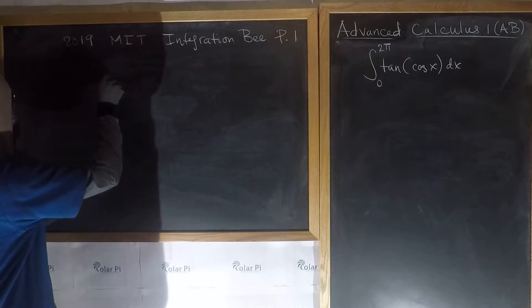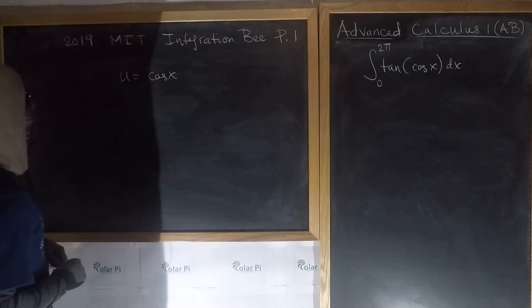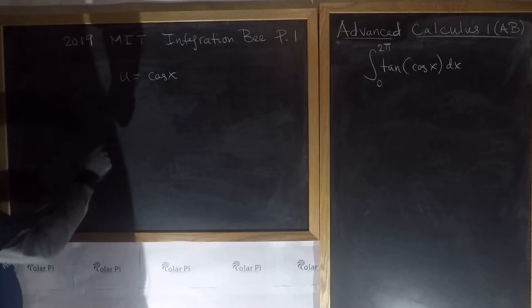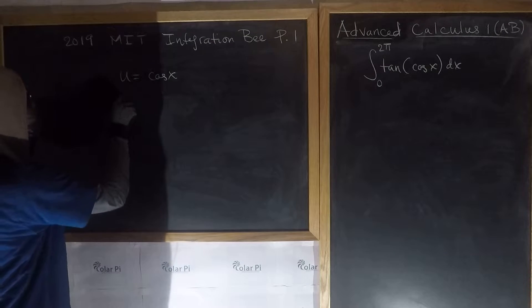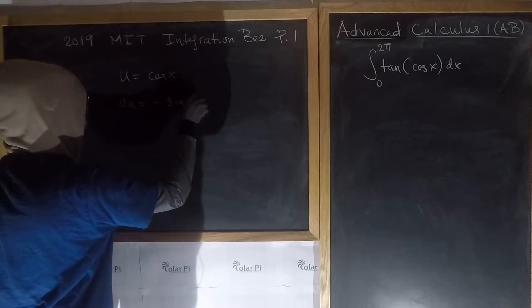So using those strategies, your first guess for u should be cos x. If you let u equal cos x, then du is going to be negative sine x dx.